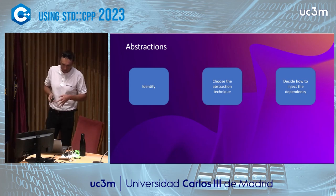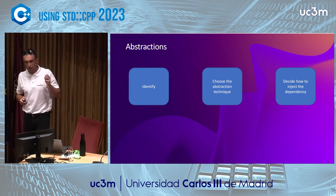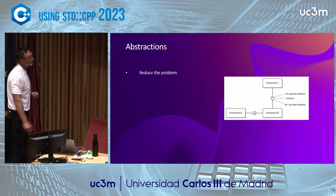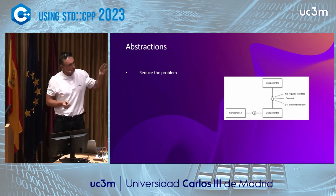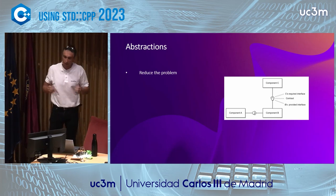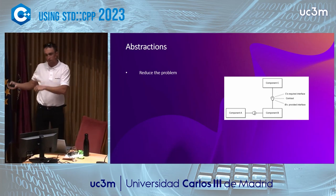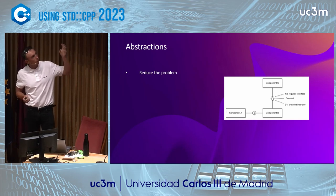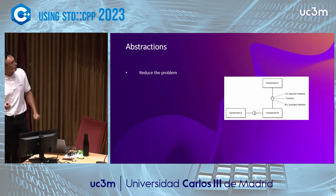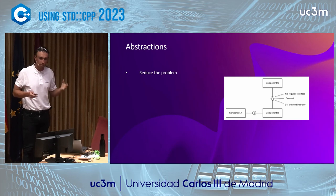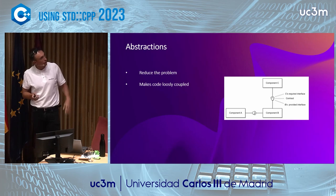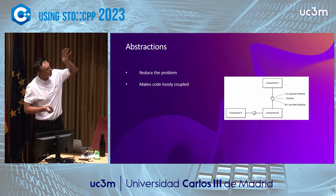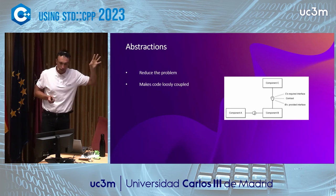Let's talk about why we need abstractions. First, they reduce the problem: components A, B, and C together solve one big problem, but partitioned into three modules we have three smaller problems. The developer working on component C doesn't need to care about internal implementation details of component B — just the required interface, the contract between them. They make the code loosely coupled: we can change the implementation of B and as long as it fulfills the contract, component C remains unmodified.